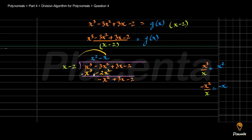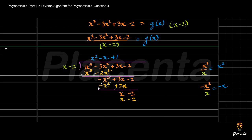We multiply minus x by (x minus 2) to get minus x square plus 2x. After interchanging signs, minus x square cancels with plus x square, and 3x minus 2x gives x, with minus 2 brought down. We can clearly see that we need to multiply by plus 1, so we write plus 1 as the next part of the quotient. Multiplying (x minus 2) by 1 gives x minus 2, and x minus 2 minus (x minus 2) becomes 0. The remainder is 0, and our quotient — which is g(x) — is x square minus x plus 1.